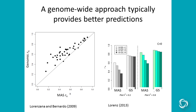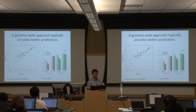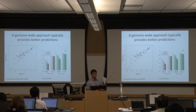The reason we like this is because for complex traits it typically works better than traditional marker-assisted selection. That's demonstrated in this figure by Bernardo's group from 2009, where they looked at about 36 different combinations of traits and populations and compared genomic prediction accuracy with traditional marker-assisted selection accuracy, showing that genomic prediction worked a lot better — or at least as well — always.